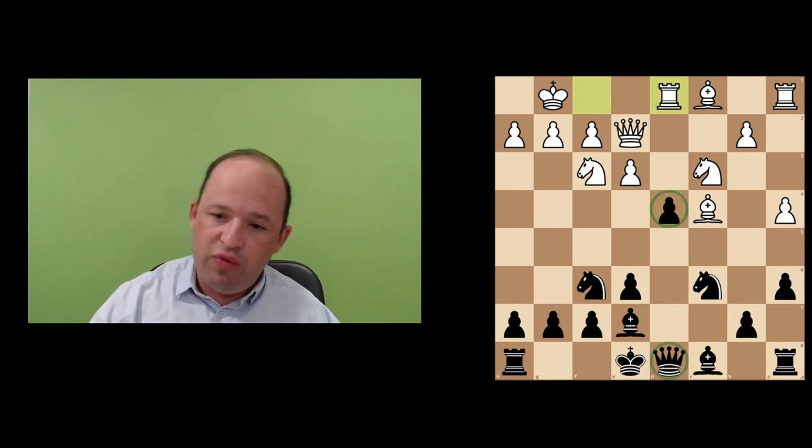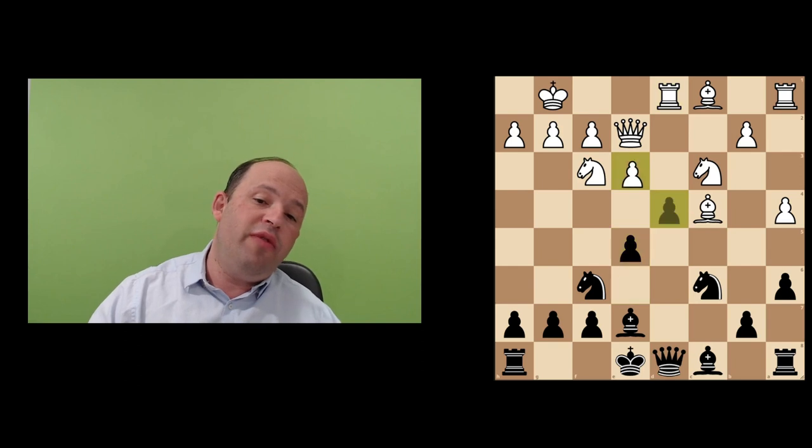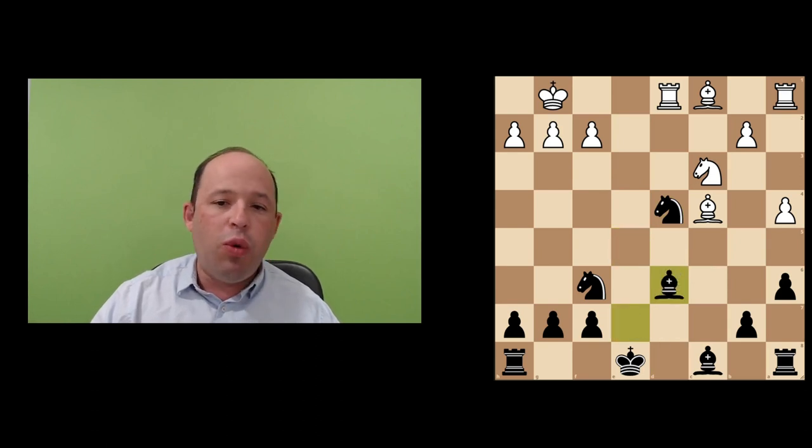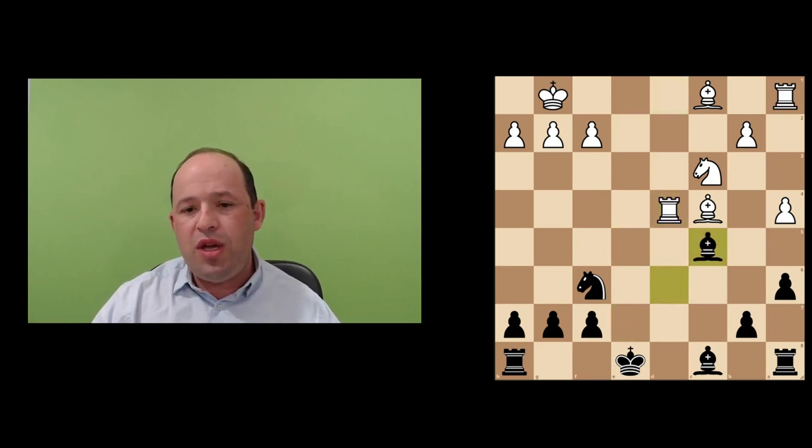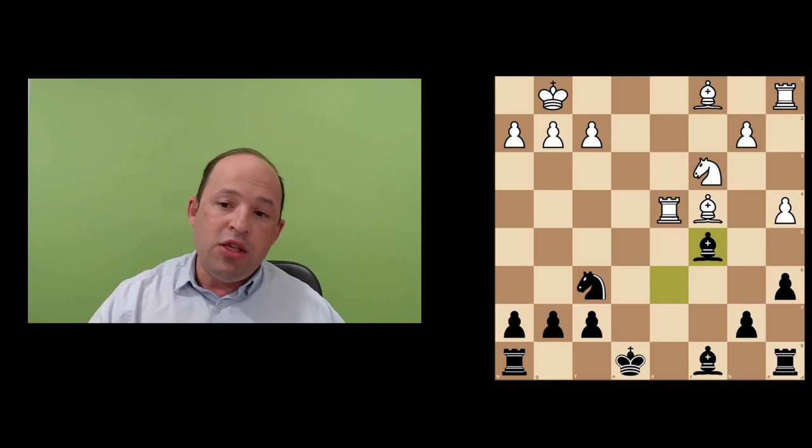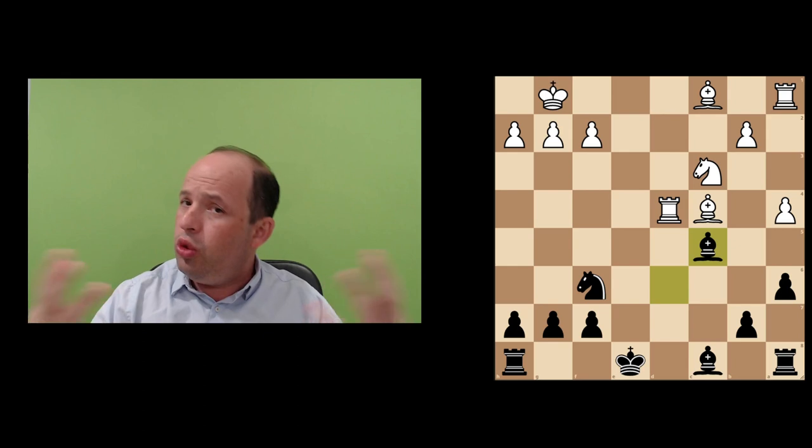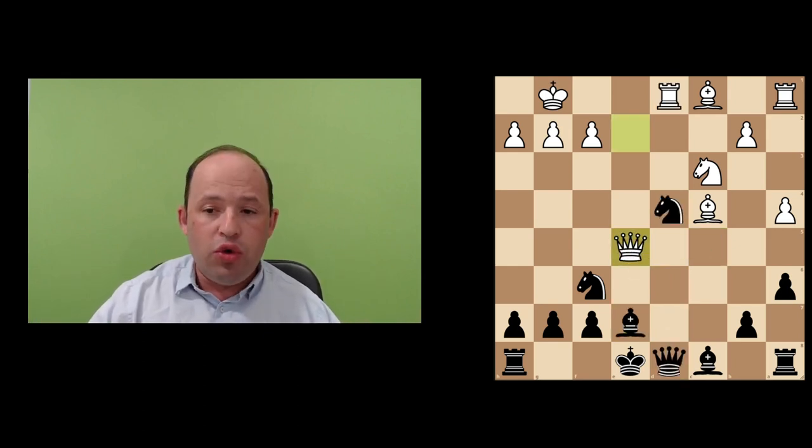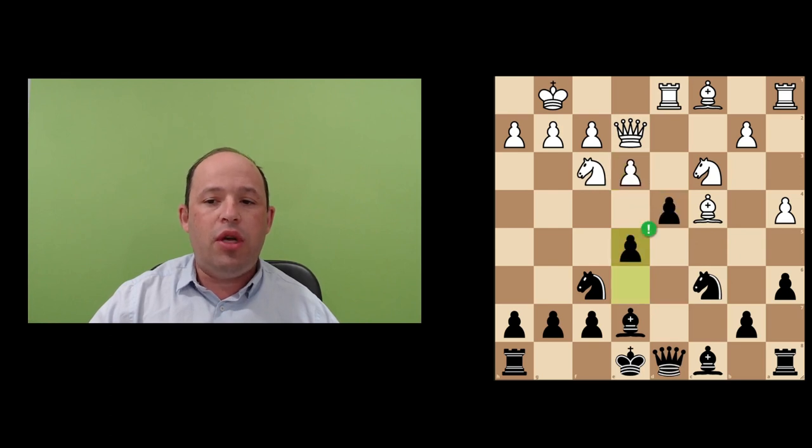Now for those who would ask how to play for a win in this position, I also have an answer. I prepared an interesting alternative. I think in this position, instead of playing move c5, we can try b6, going for fianchetto. Bishop c4, Bishop b7, castle, Bishop e7.